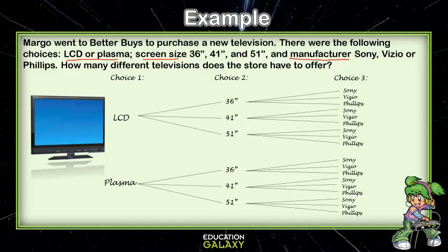So we've created a tree diagram of all the possible combinations. The problem wants to know how many there are — we just count them up: 1 through 18. So there are 18 combinations.